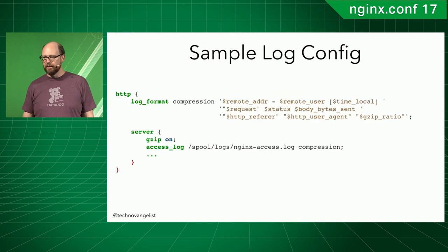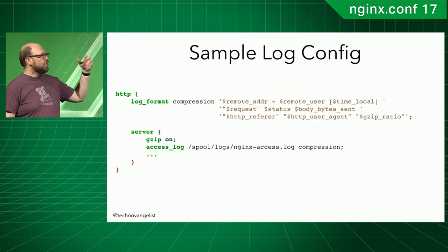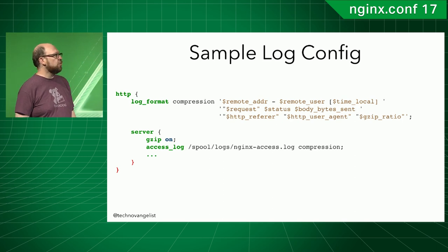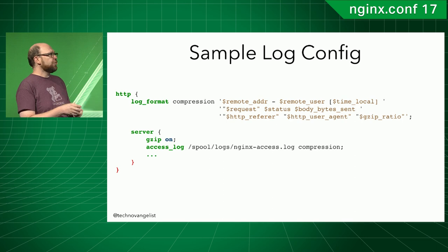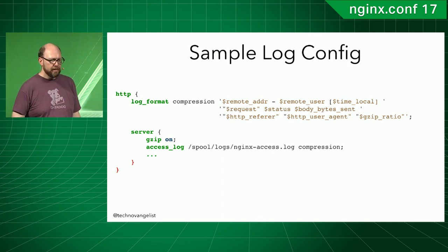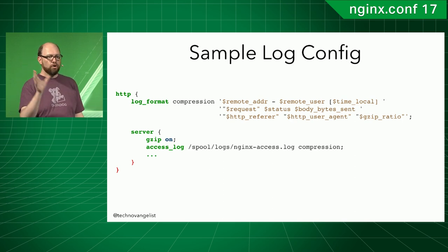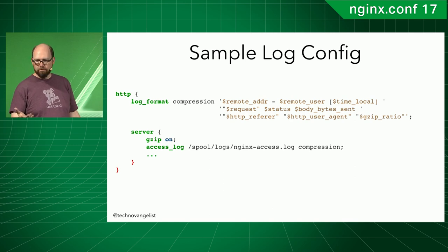How do you configure that log file? Here's a sample configuration. All you're doing is defining a log format — in this case called 'compression' — and then outputting a string with a bunch of variables that get filled in at each request. Then in the server block, you set access_log, specifying where to store it and what format to use. Pretty easy.